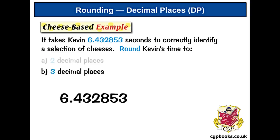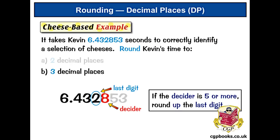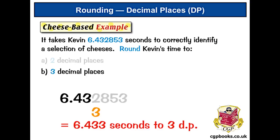Moving on to part b. This time, the last digit is 2, because we want 3 decimal places. And the decider is 8. When the decider is 5 or more, we round up the last digit. So we round 2 up to 3. And so our answer is 6.433 seconds.